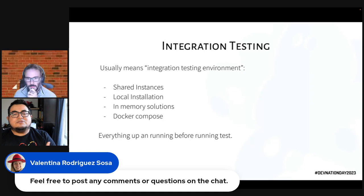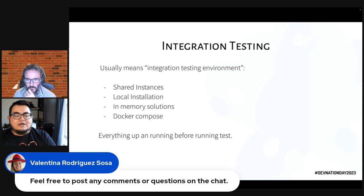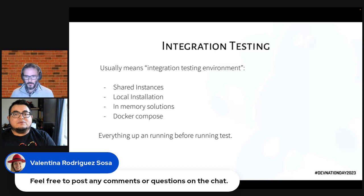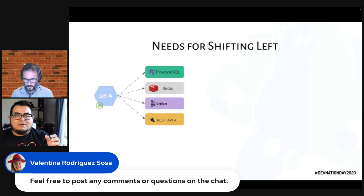Another approach is in-memory solutions, but that's limiting because you won't have certain features present in real environments. One of the latest trends is using Docker Compose to reproduce and start a local version of certain environments — it's easier than a full local installation, but it still consumes resources alongside your application. These are a series of challenges when working with distributed systems.